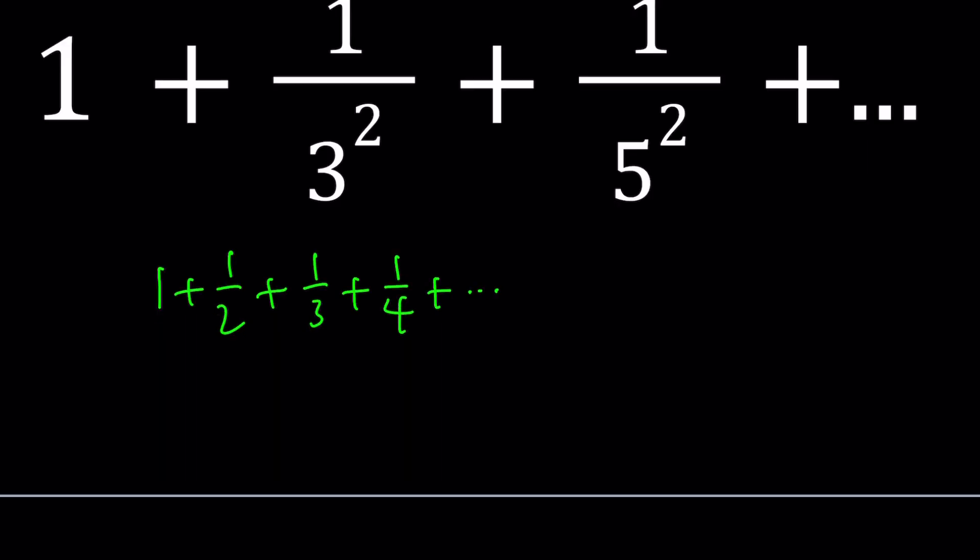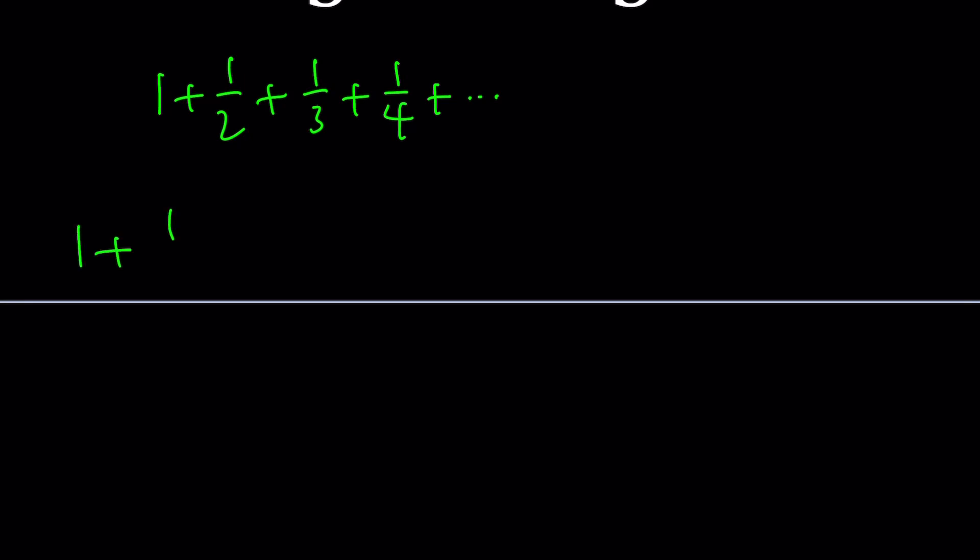One thing we know is that 1 + 1/2² + 1/3² + 1/4² and so on, all the way up to infinity, equals π²/6. This is called the Basel problem, and this sum is approximately 1.644934. Interestingly, that's kind of close to the golden ratio. Maybe we can talk about the proof of this one day.